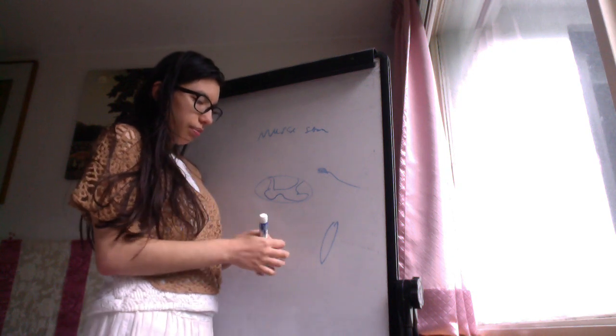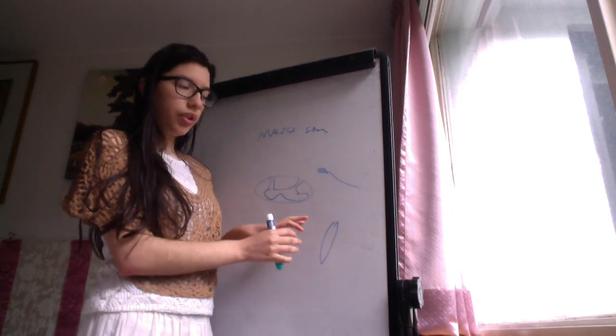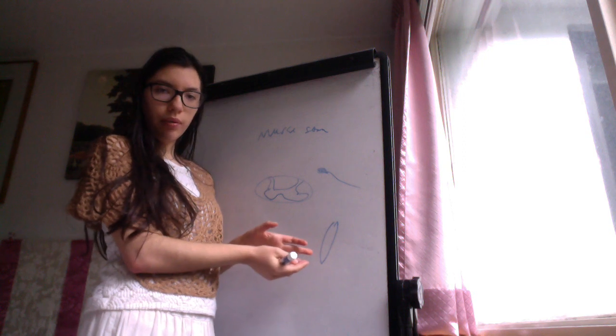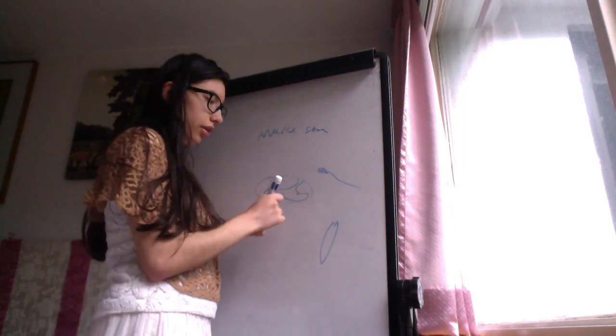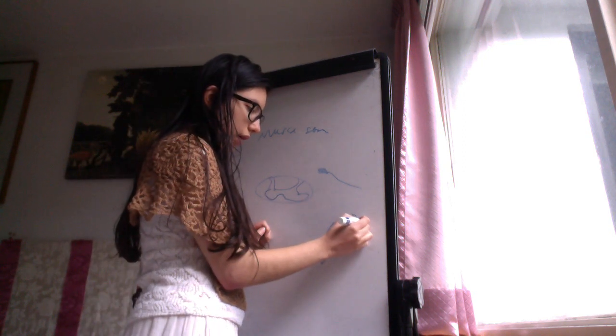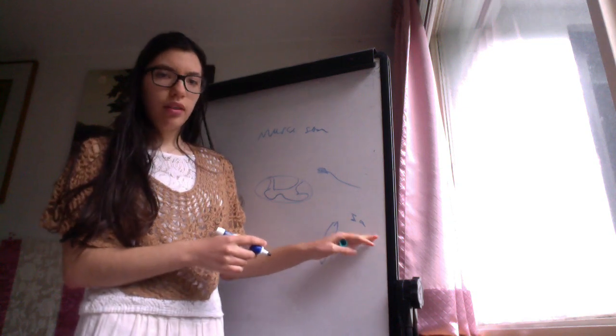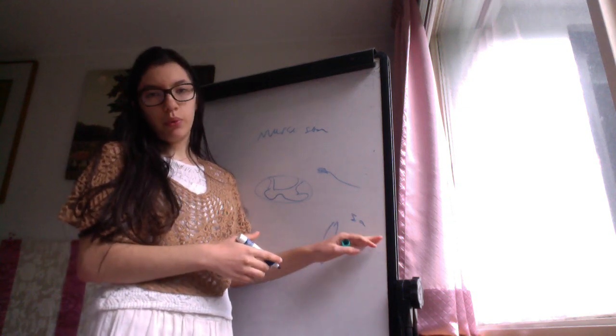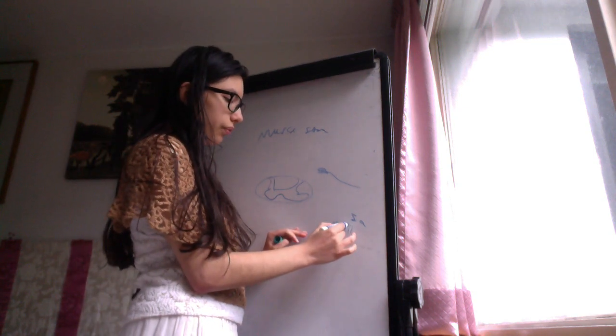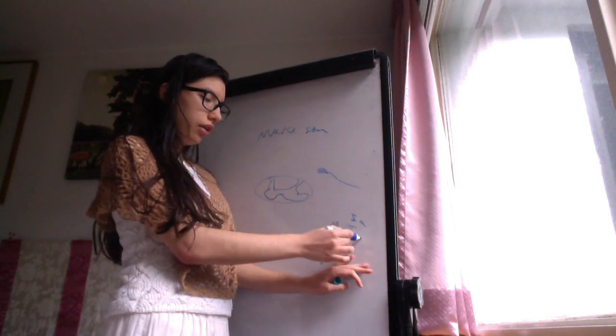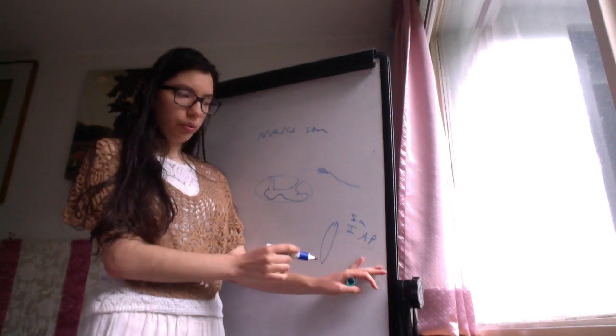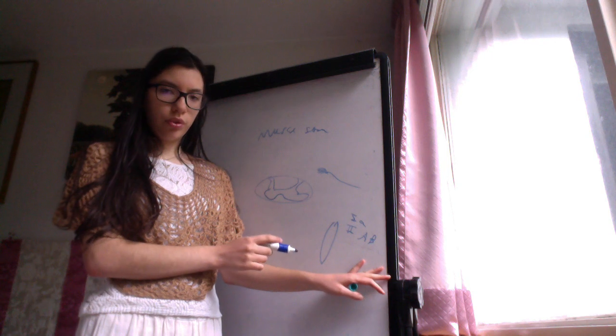We have the central part of the intrafusal fibers are sensed by the type 1A fibers, also called A-alpha, but type 1A, and type 2 fibers, or A-beta. These are the ones that we care for the muscle stretch reflex.